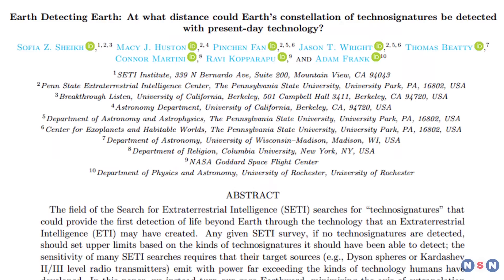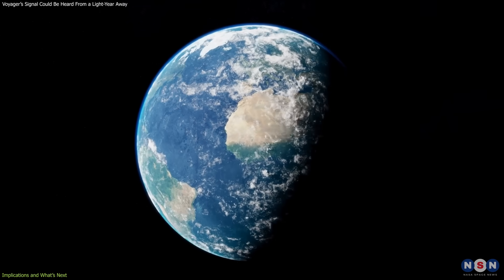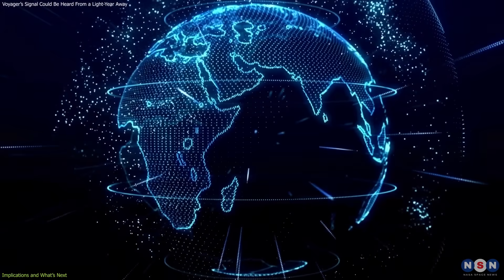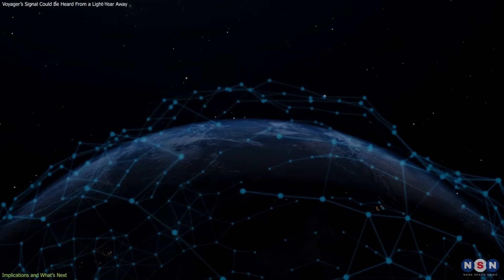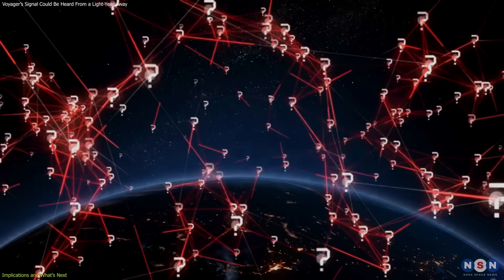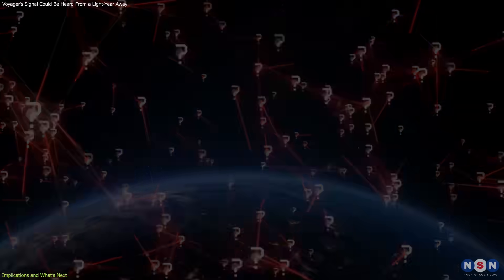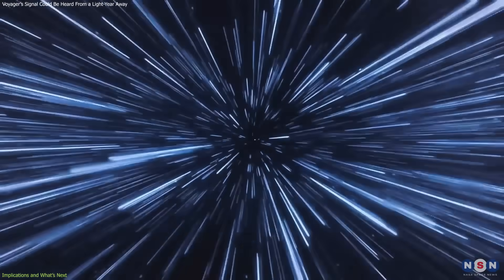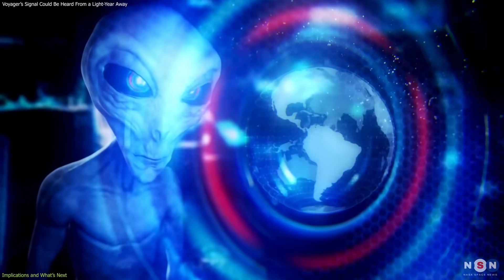The practical implication of this research is that our planet is not as quiet as we once imagined. Whether we intend to or not, we've been announcing our presence to the galaxy through spacecraft transmissions, telecommunications infrastructure, and high-power radar. This visibility raises both scientific and philosophical questions. If we're visible, even faintly, to observers dozens or even hundreds of light-years away, then we may already have been detected by others, assuming they're looking.